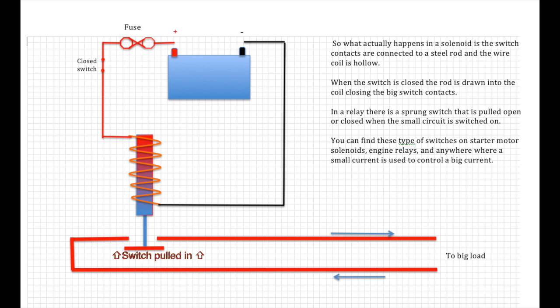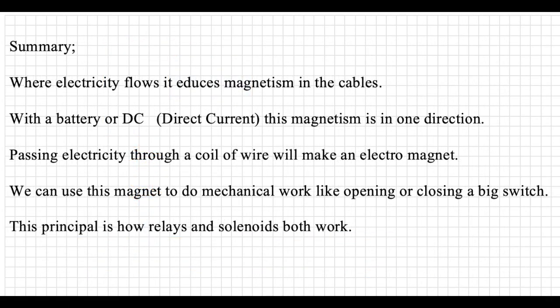In relays, there is a switch that is pulled open or closed when a small circuit is switched on. You can find these types of switches on starter motors, solenoids, and engine relays. Most of the systems on a bigger boat are controlled by relays or solenoids.